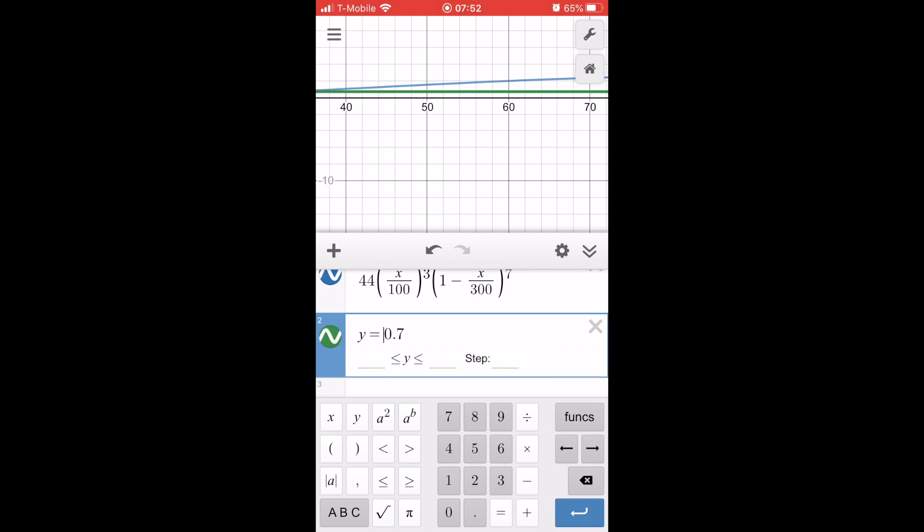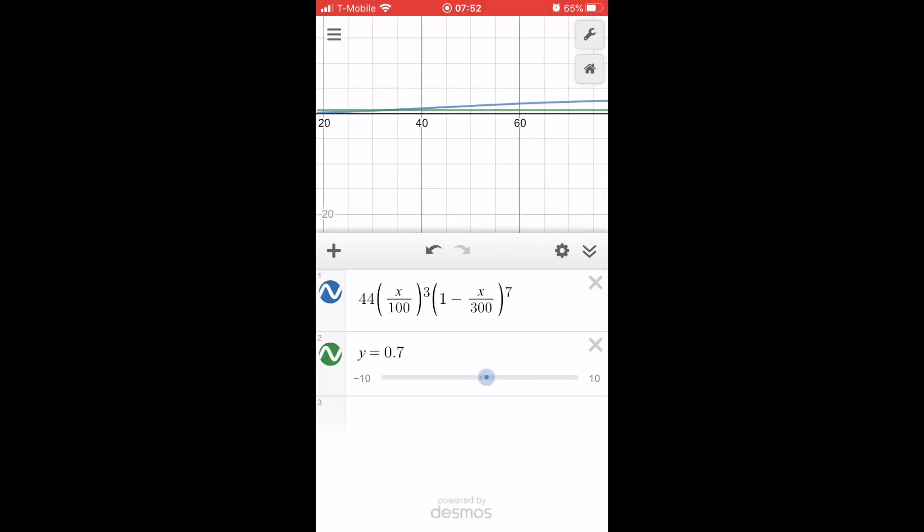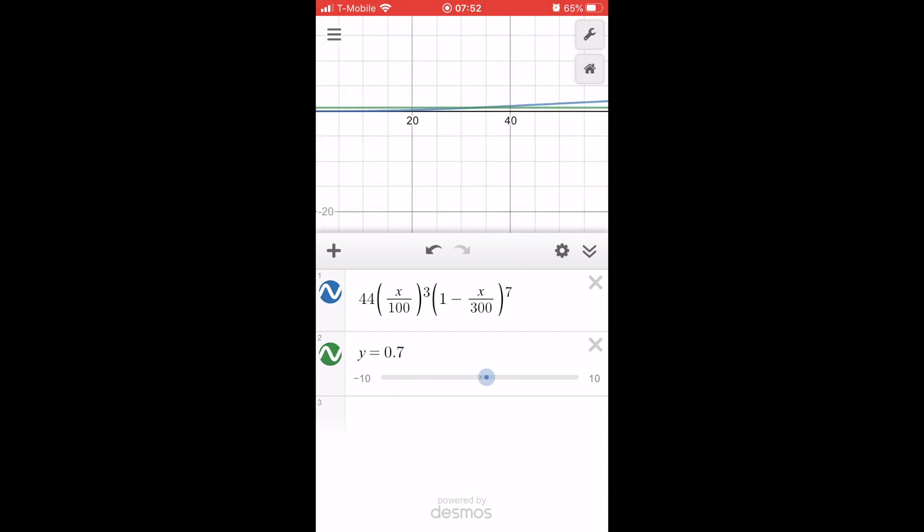And then after that you're going to have the two lines and you can zoom out with your fingers. I use it on my phone and then you just kind of click wherever you think they intersect. It doesn't have to be precise and it'll actually give you the point of intersection.